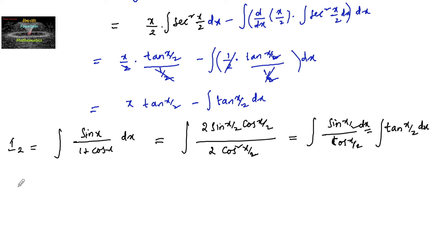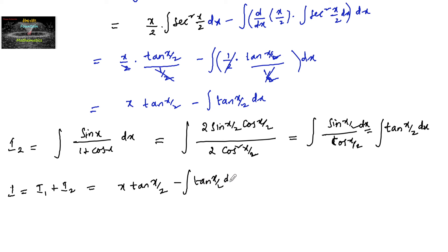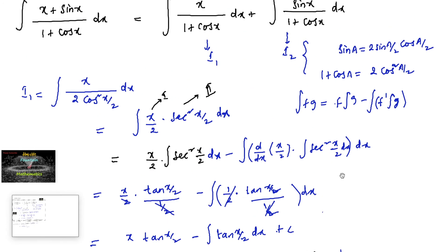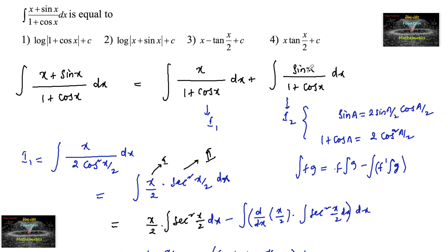Now combining, I = I1 + I2 = [x·tan(x/2) − integral of tan(x/2) dx] + integral of tan(x/2) dx. The two tan(x/2) integrals cancel each other out, and we are left with x·tan(x/2) + C. This is the final answer, corresponding to the option x·tan(x/2) + C.